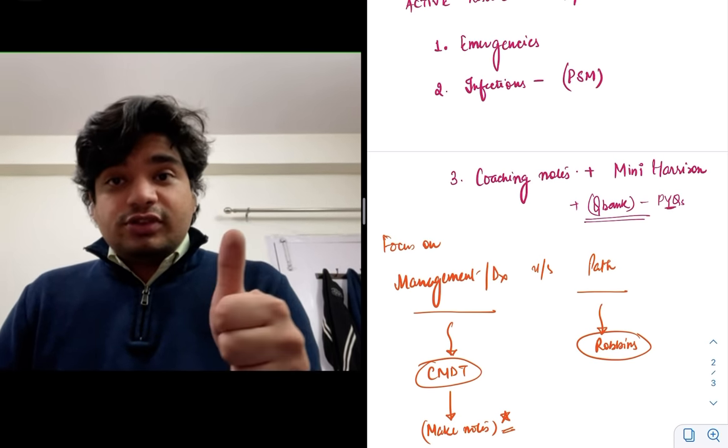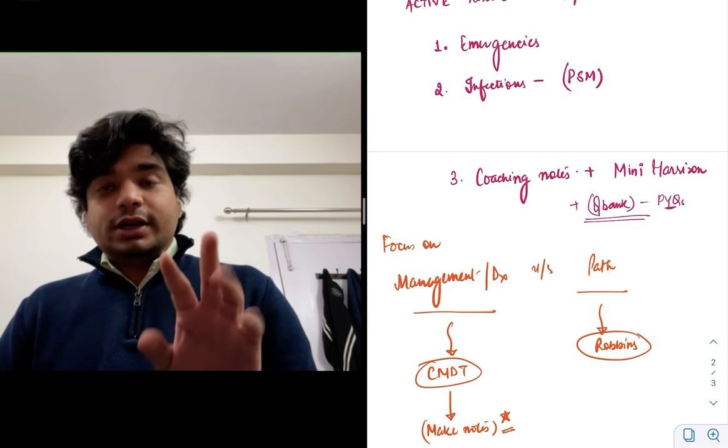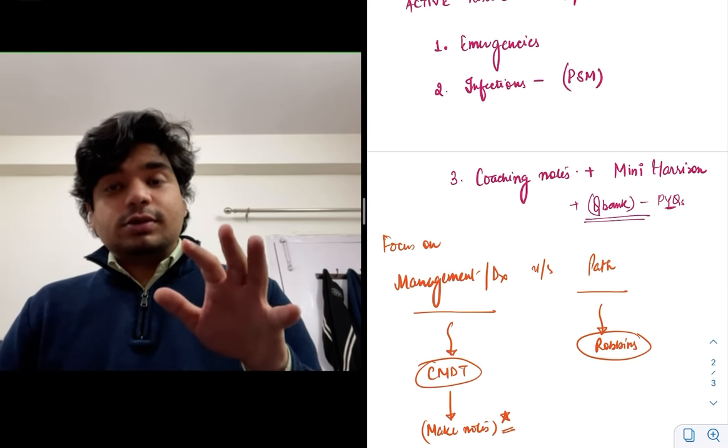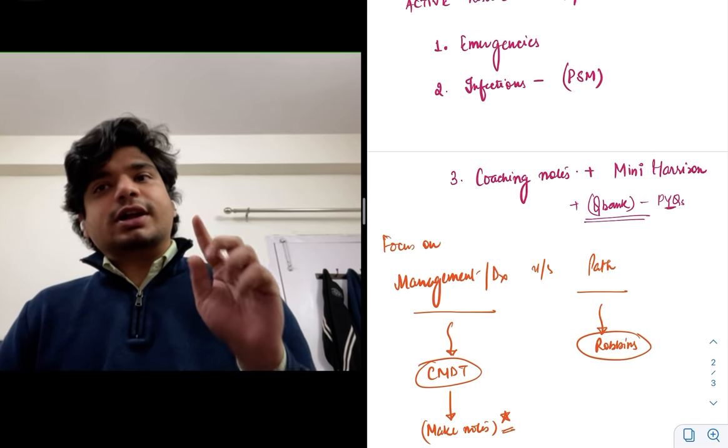First and foremost is emergencies. Make sure you do your emergencies properly. For emergencies, there's a book I'll say, Washington Manual of Critical Care that you can consider. It's a foreign authored book. If you want an Indian book, Chug is a really good book. You can actually consider that.